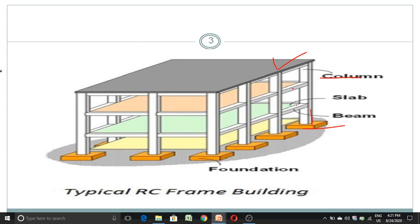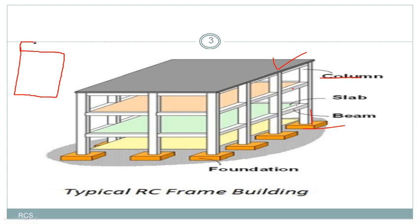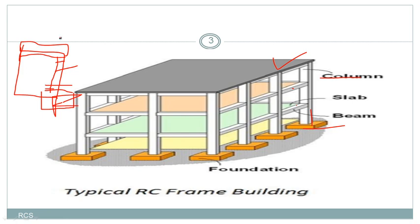If we take a common single building, we have a slab, and beneath the slab we have beams, and these beams are supported by columns, and these columns are constructed over a pad foundation. So these are the major parts of a building.